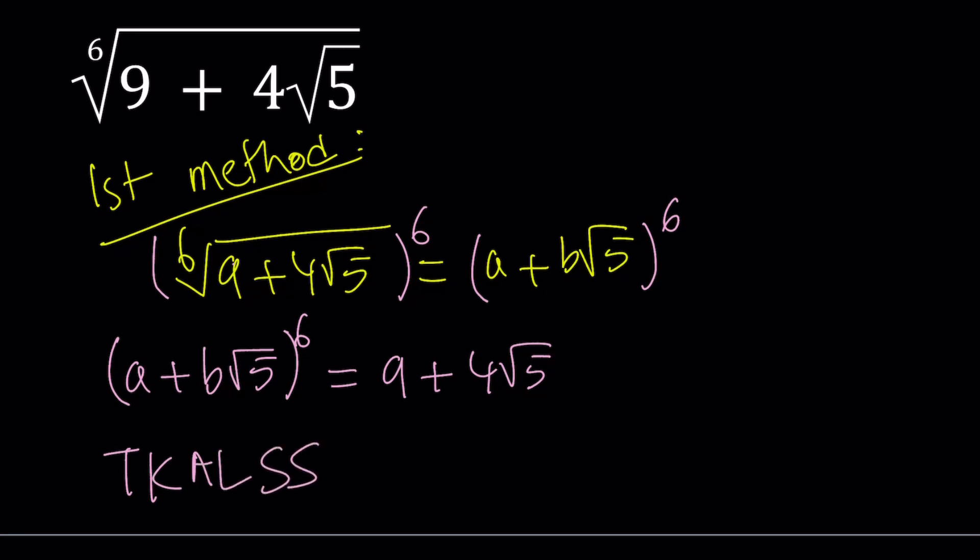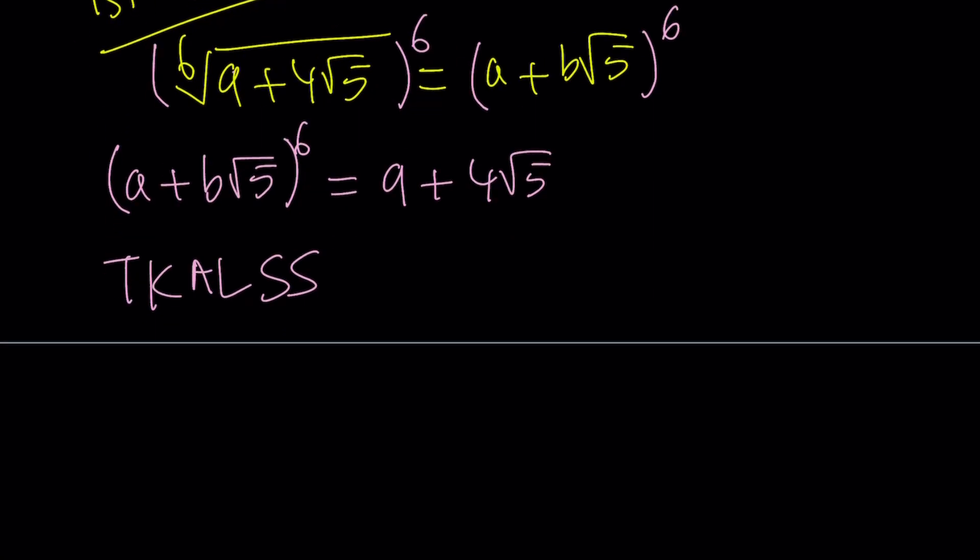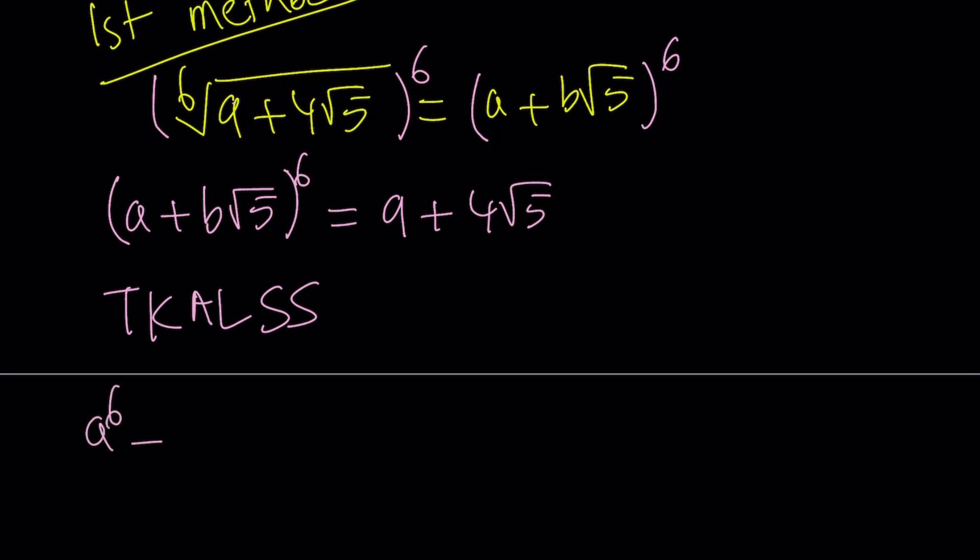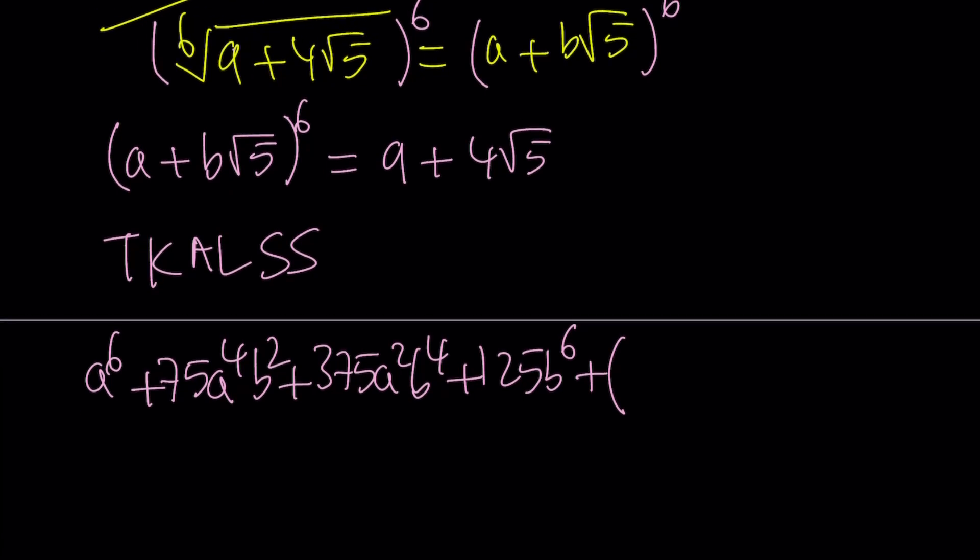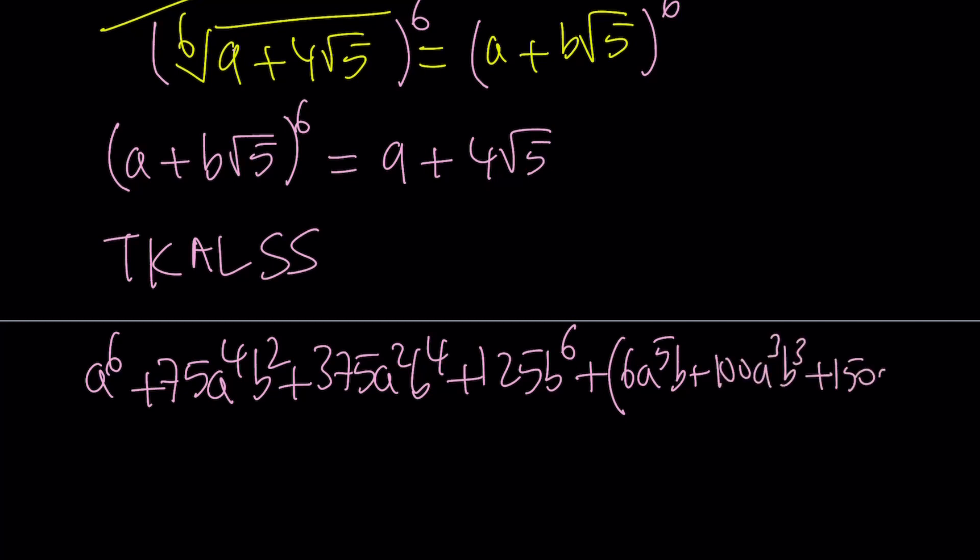To keep a long story short, we're going to expand this using the binomial theorem. We're going to get a to the sixth power plus 75 a to the fourth b squared plus 375 a squared b to the fourth power plus 125 b to the sixth power, plus we're going to get the terms that have root 5 in it: 6a to the fifth b plus 100 a cubed b cubed plus 150 a b to the fifth power, and all of that is multiplied by root 5.